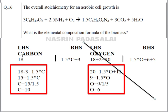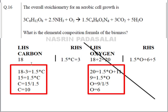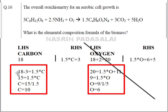On the left-hand side, the total number of carbons is 6×3 = 18. On the right-hand side, we have 1.5×c carbons from biomass and 1×3 = 3 carbons from CO₂. Equating both sides: 18 = 3 + 1.5c, so 15 = 1.5c, giving c = 15/1.5 = 10.